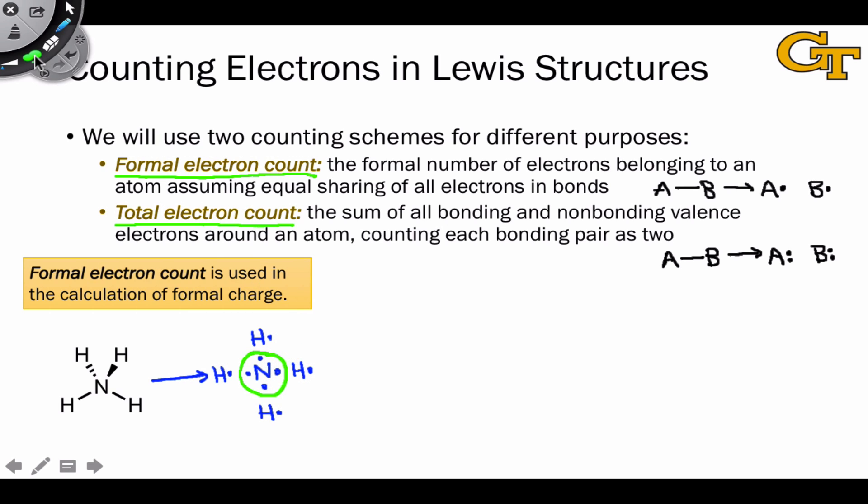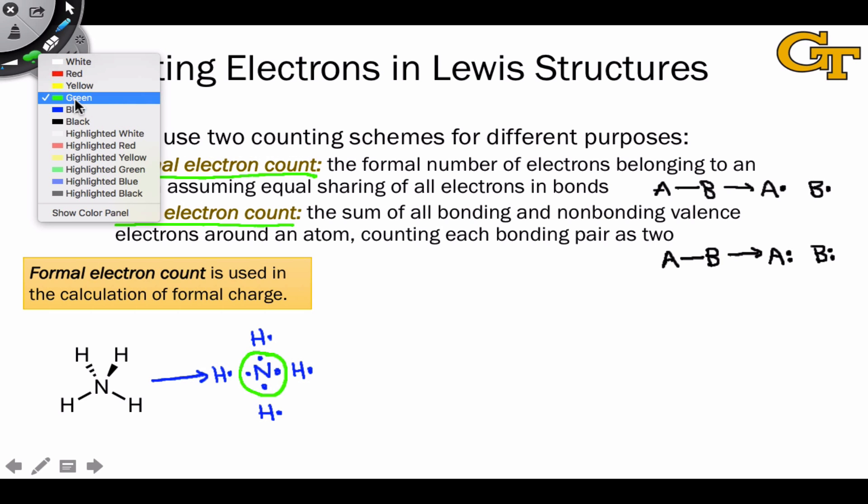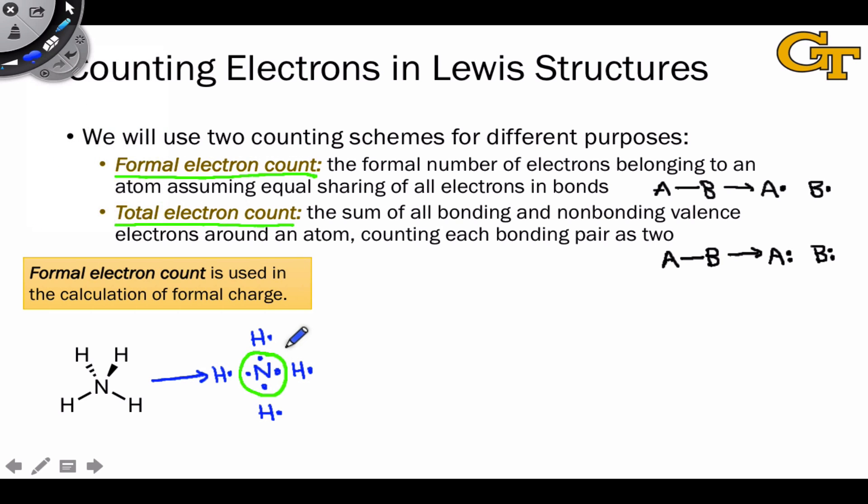If you examine the periodic table, you'll see that nitrogen ordinarily has five valence electrons. It's in group 15, and here the nitrogen has four, and so its formal charge here is plus one because it has one fewer electron in this structure than the neutral atom does. Each of the hydrogens has one valence electron, and hydrogen as a neutral atom has one valence electron, and so the charges on the hydrogens are zero.